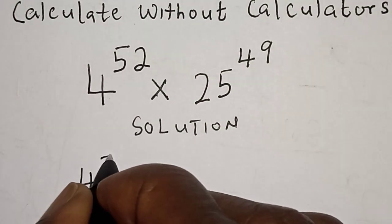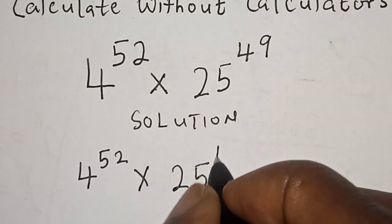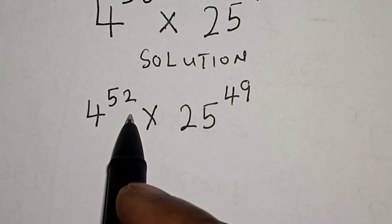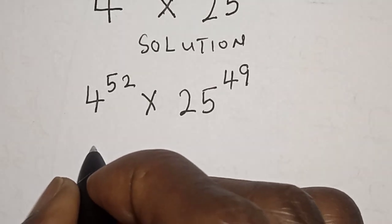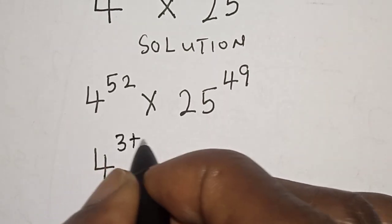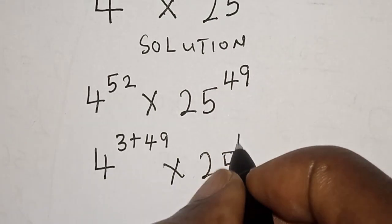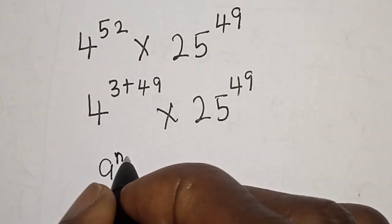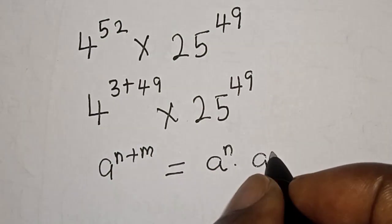4 raised to power 52 multiplied by 25 raised to power 49. Now 52 is the same thing as 49 plus 3, then we have 4 raised to power 3 plus 49 multiplied by 25 raised to power 49. Remember, if you have a raised to power n plus m, this is equal to a raised to power n multiplied by a raised to power m.